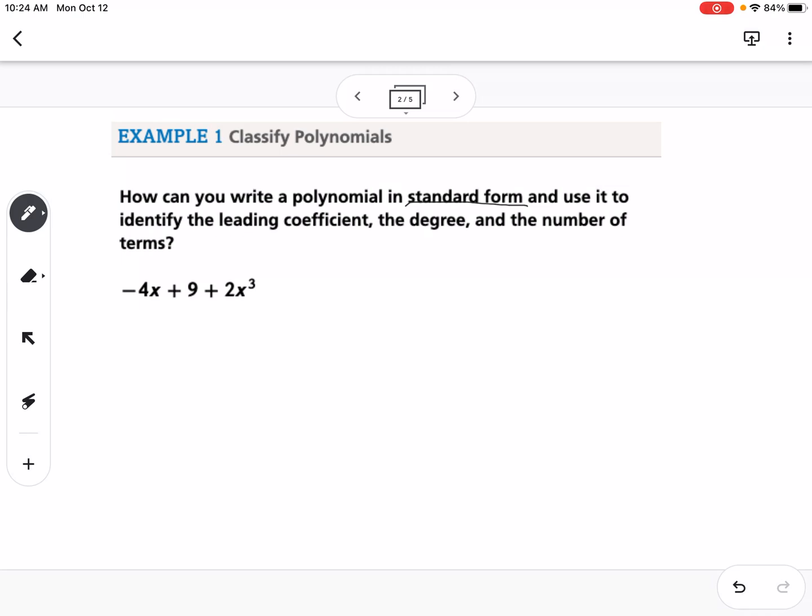So the first example is, how can you write a polynomial in standard form and use it to identify the leading coefficient, the degree, and the number of terms? Okay, so first of all, standard form, we need to define that. It's the highest to lowest power of x. So we arrange our terms with the highest power of x, then the next highest, and so on.